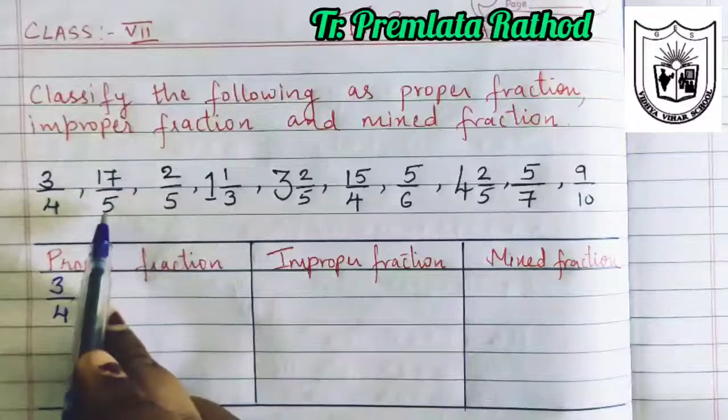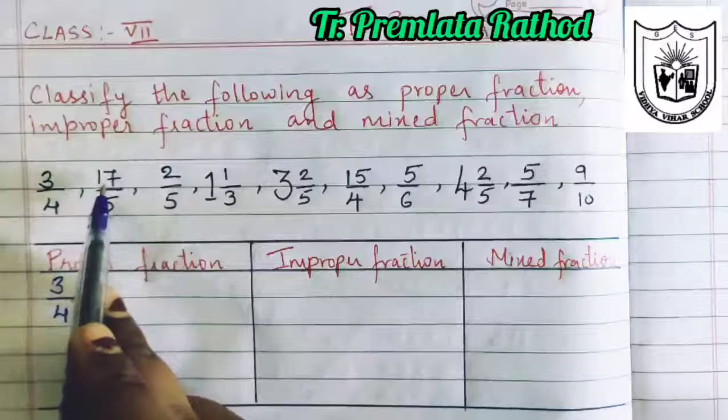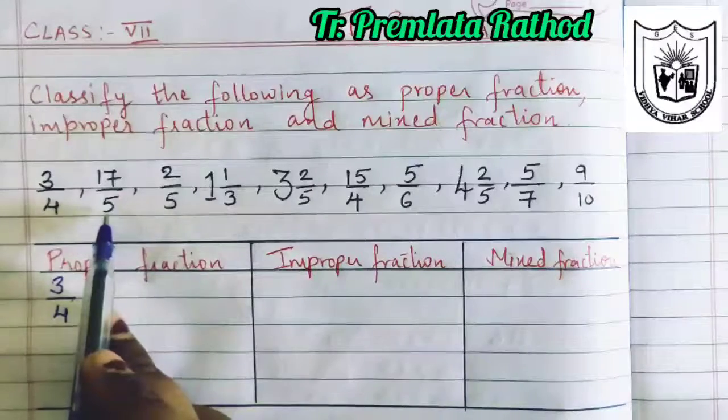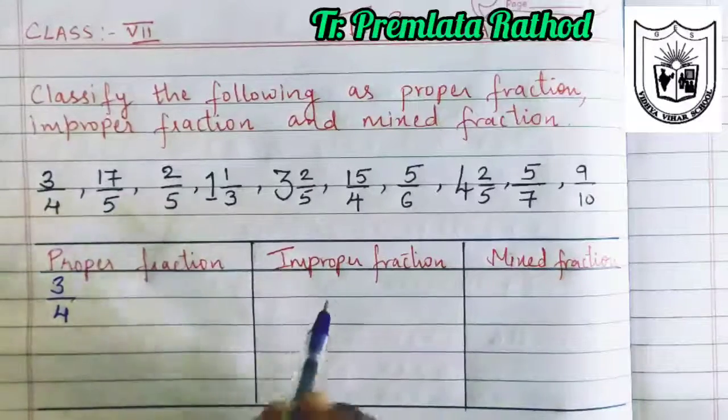Look at the second example, 17 by 5. Here numerator is greater compared to your denominator, so this will go under improper fraction.